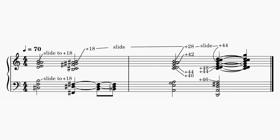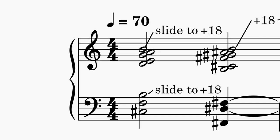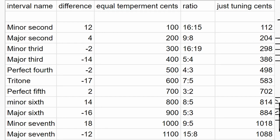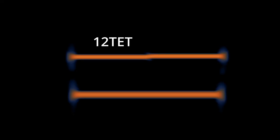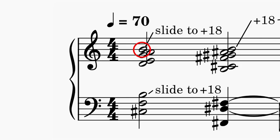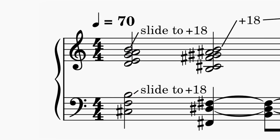Now we have all the information we need to analyze Jacob's CTM. We begin with a chord that at the start is tuned to 12-tet, but over the course of the chord the Bs slide up 18 cents. Why? Because of its relationship to the root of the chord. The B3 is a minor 7th above the C sharp, which tells us the interval needs to be 18 cents wider in order to be justly tuned. The B4 is an octave above the B3, so it rises in the exact same way.